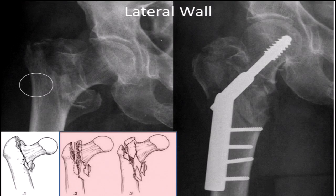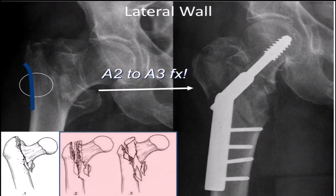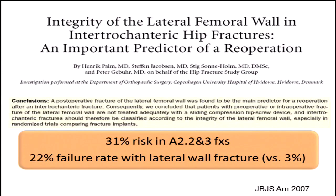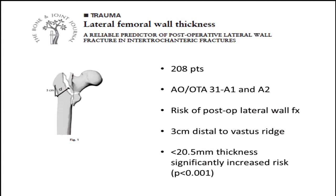What about the lateral wall? If you look at the fracture we discussed, you have to be concerned about it. Here's that simple A2 — if you break that lateral wall, you turn this A2 into an A3, and then it fails. How often is that likely to happen? There's a 31% risk of an A2 fracture developing a lateral wall fracture. If that occurs, it increases your failure rate to almost a quarter of cases. The thickness of the lateral wall can predict this — in our patient, that lateral wall is quite thin. I'd argue you're setting yourself up for a potential disaster.